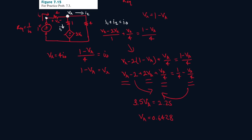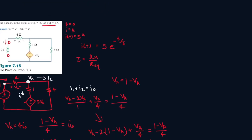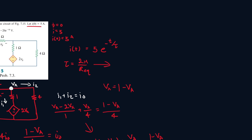And now we can solve for IO. So IO will be 1 minus VA, so 1 minus 0.6428 all over 4, and this will be IO. So IO is 0.08928. So the resistance equivalent will be 1 over that, so that's 11.2 ohms. And now we can put it into here. So the time constant will be 2 henrys over 11.2, which gives me 0.17857.